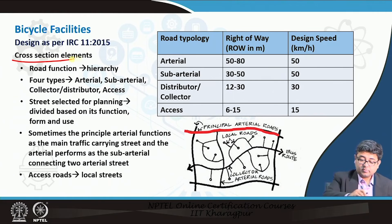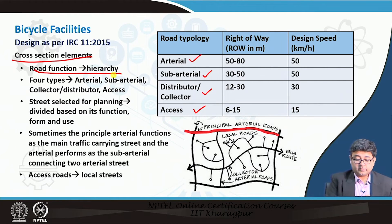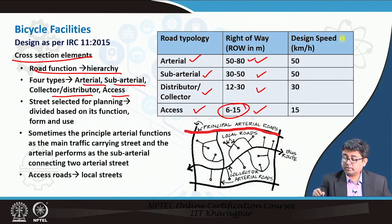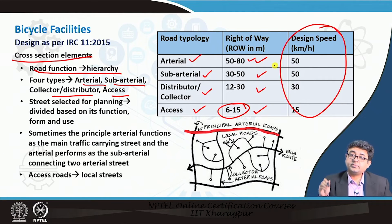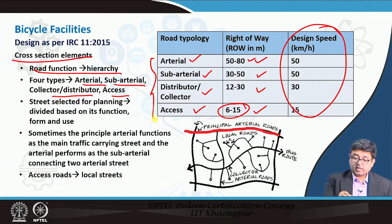For cross-sectional elements, the design depends on the type of road. You have to keep in mind which road hierarchy you are designing the bicycle facility for. Looking at four hierarchies — arterial, sub-arterial, collector, and access roads — the right-of-ways range from 50 to 80 meters for arterials down to 6 to 15 meters for access roads. Knowing the design speed of vehicles is essential for designing bicycle tracks accordingly; otherwise they may become unsafe for cyclists.